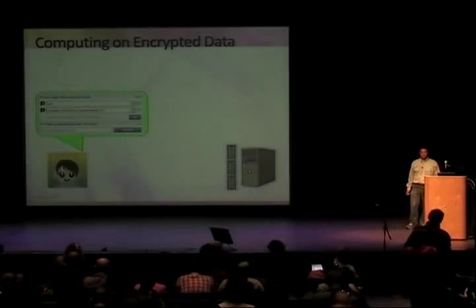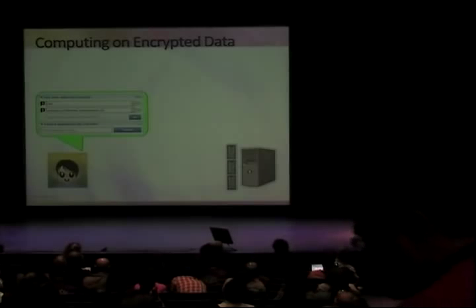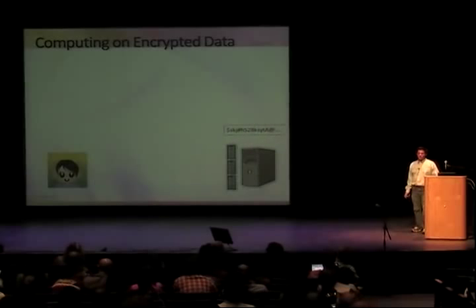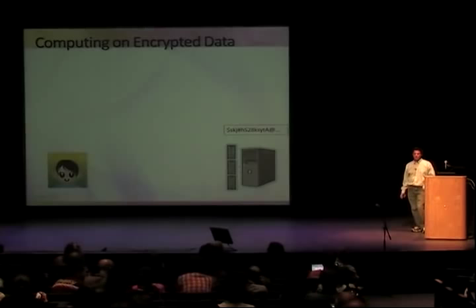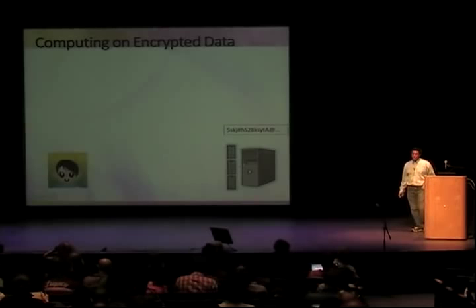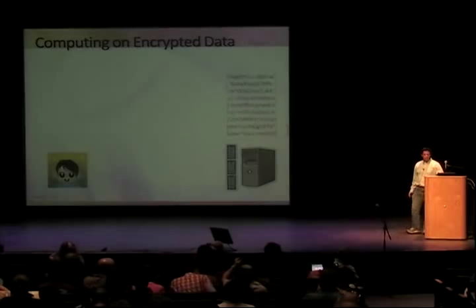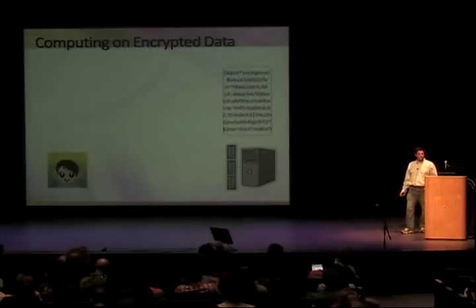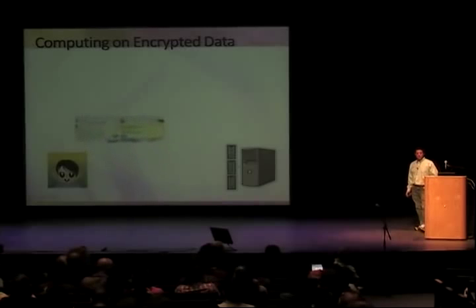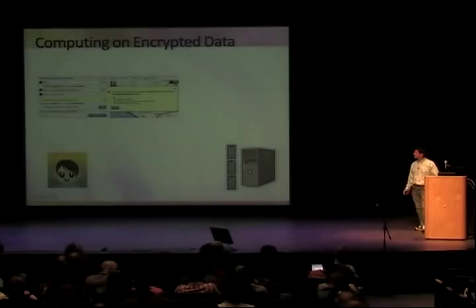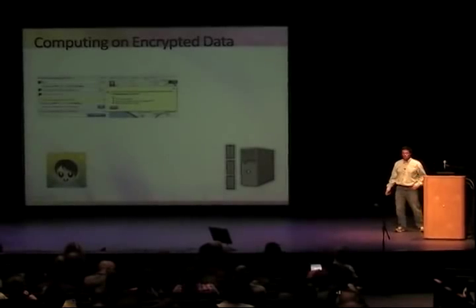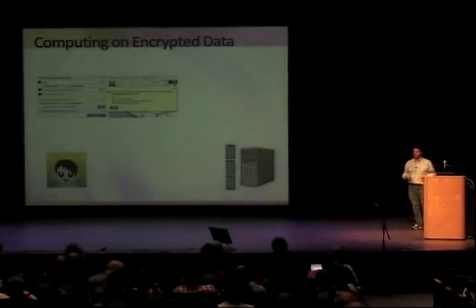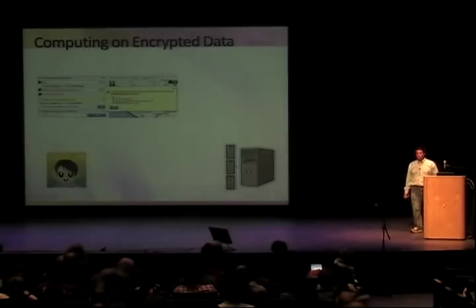Suppose I wanted drive directions from LAX to the University of California, Santa Barbara. I have my query, which is just a string. I have my secret key, I can encrypt my query and send it to the cloud, and the server on the other end sees only a string of gibberish. Nonetheless, I want the server to be able to work on this gibberish and produce another string of gibberish, such that if I then decrypt that later string, I actually get my answer.